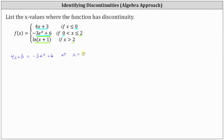If this equation holds true at x equals zero, then the function is continuous at x equals zero. We also need to check if negative 3e^x + 6 equals the natural log of (x + 1) at x equals two, and if this equation holds true at x equals two, the function is continuous there.